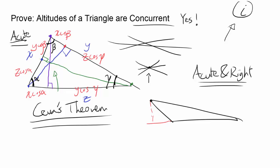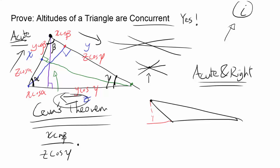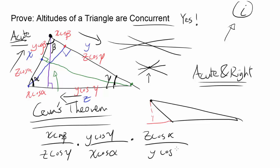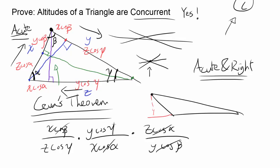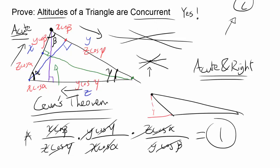Now let's apply Ceva's theorem. Ceva's theorem tells you to start at one point and go around the triangle — clockwise or counterclockwise — and multiply the ratios of the partition segments. You start with X cosine of beta, divide by Z cosine of gamma, multiply by Y cosine of gamma over X cosine of alpha, times Z cosine of alpha over Y cosine of beta. All the cosines cancel out, and X, Y, Z all cancel out. So this product equals 1. And Ceva's theorem tells you that if this ratio equals 1, the cevians — in this case the altitudes — of a triangle are concurrent. So we are done.